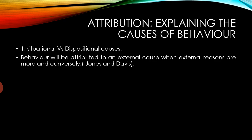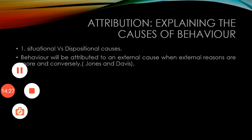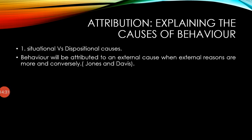Next comes attributions — explaining the causes of behavior. The process of attribution is the individual's understanding of the reasons behind people's behavior. It is a theory concerned with how individuals interpret events and how this relates to their thinking and behavior. The major proponents in this research area include Heider, who was first to propose a psychological theory of attribution, followed by Weiner and colleagues, and then Jones and Davis.